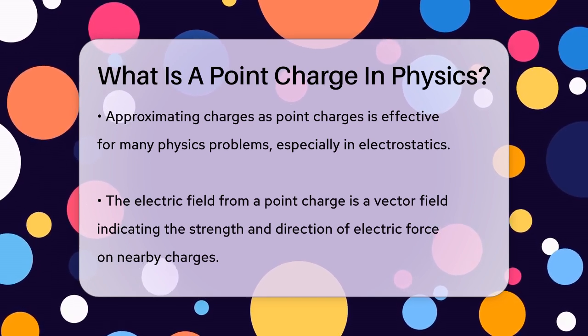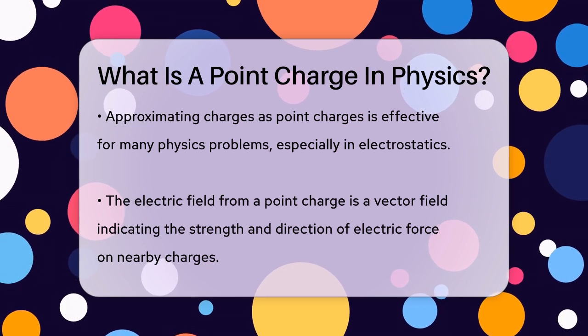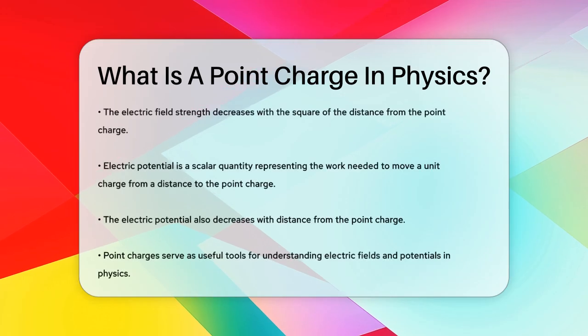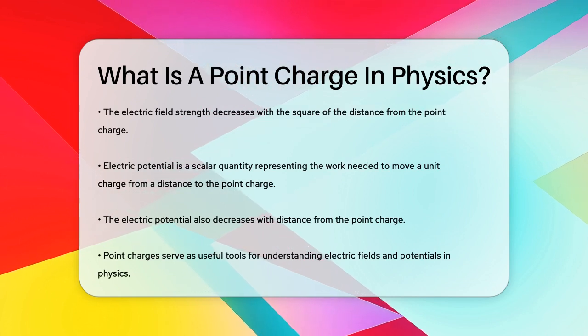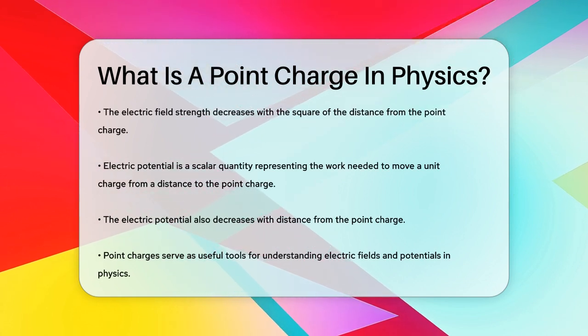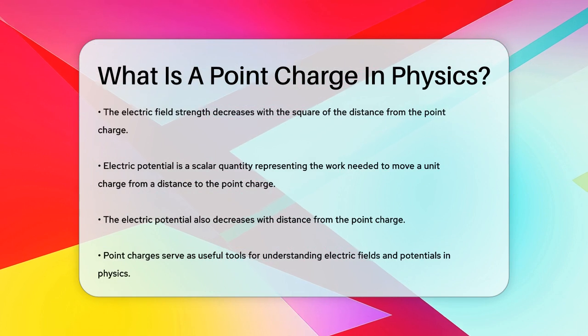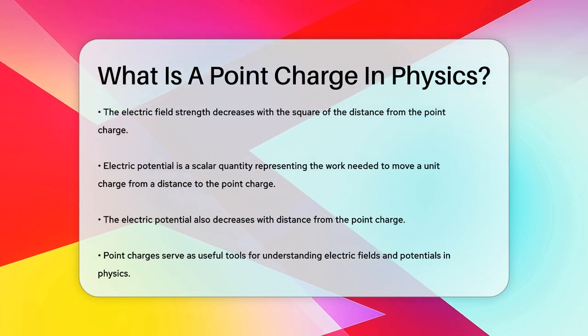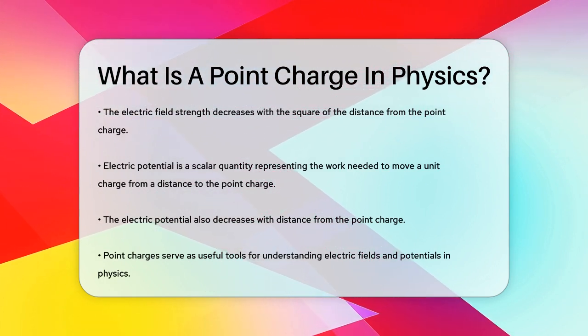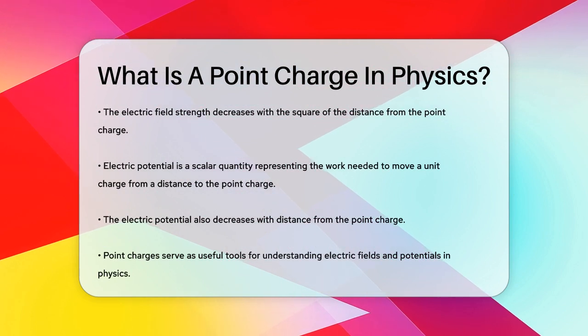This electric field decreases with the square of the distance from the point charge. The electric potential, which is a scalar quantity, describes the amount of work required to move a unit charge from an infinitely far distance to a point near the point charge. This potential decreases with the distance from the point charge.